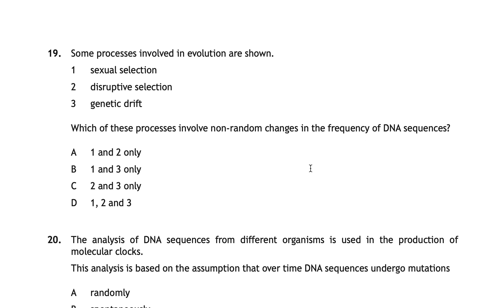Question nineteen is also no longer in the current Higher Biology course. It asks which processes involve non-random changes in the frequency of DNA sequences — sexual selection, disruptive selection, and genetic drift. The correct answer is A. Any form of selection is non-random, because a certain trait has been selected for rather than changing by chance. Genetic drift, by contrast, is random.